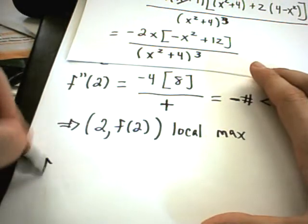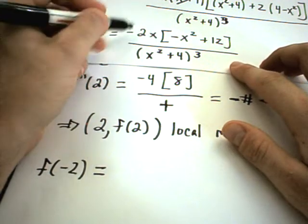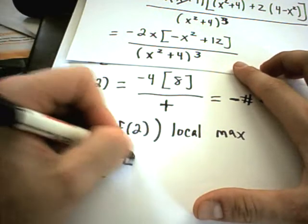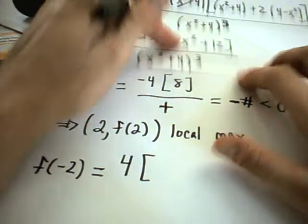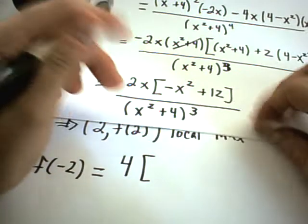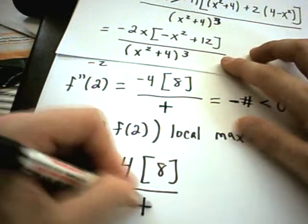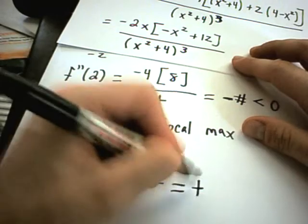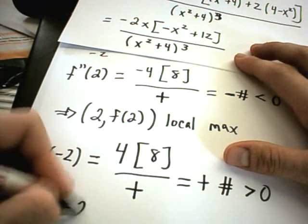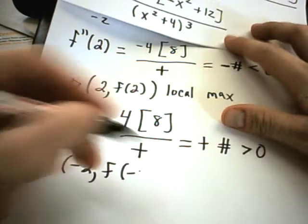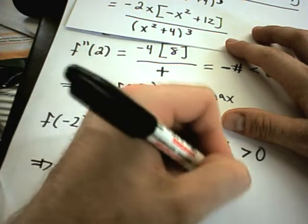Now plugging in negative 2: the only thing that really changes is the negative 2x term, which turns into a positive 4. When I square the negative 2 I still get 4, then with plus 12 I get 8, and again the denominator is always positive. So this gives some positive number, which is greater than zero. That means the point negative 2 comma f of negative 2 is a local minimum.